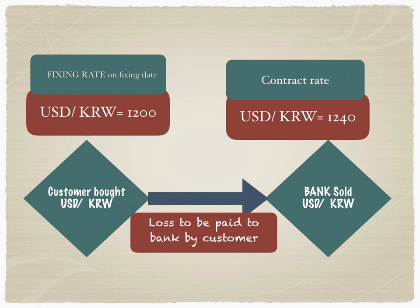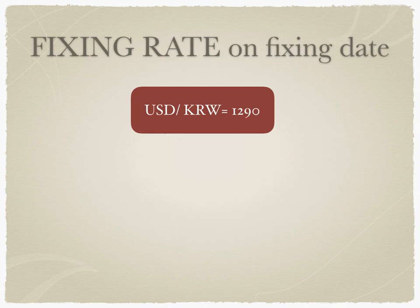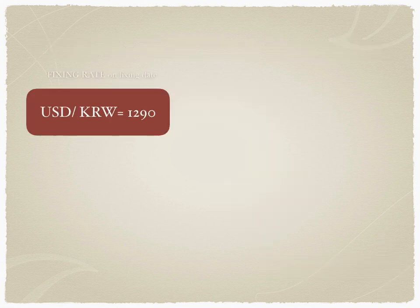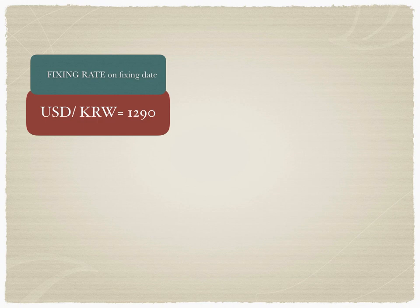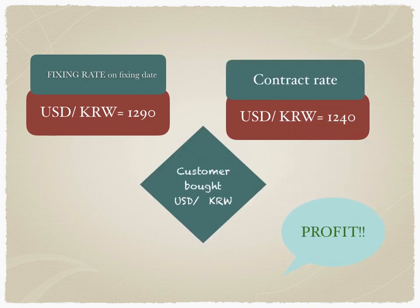Profits and losses are calculated and the net profit or net loss is only exchanged in a single currency. In the second scenario, on the fixing date the fixing rate is 1290. The customer's contracted rate is 1240. The customer has bought USD/KRW — the contracted rate is 1240 and the fixing rate is 1290 — therefore it's a profit for the customer.